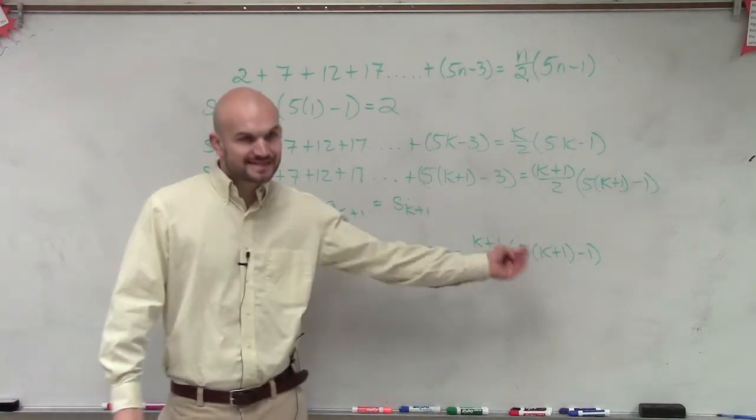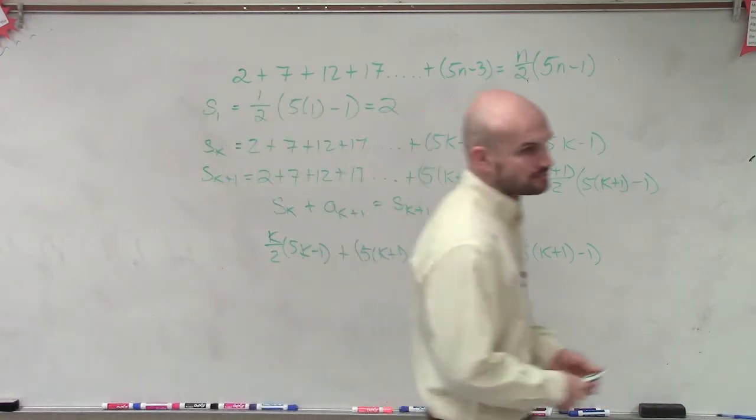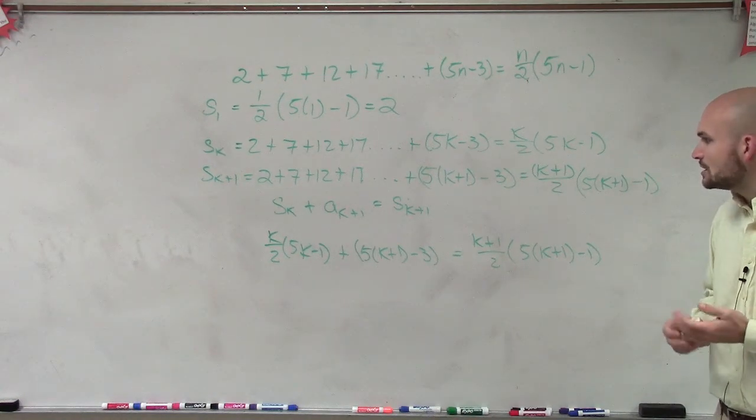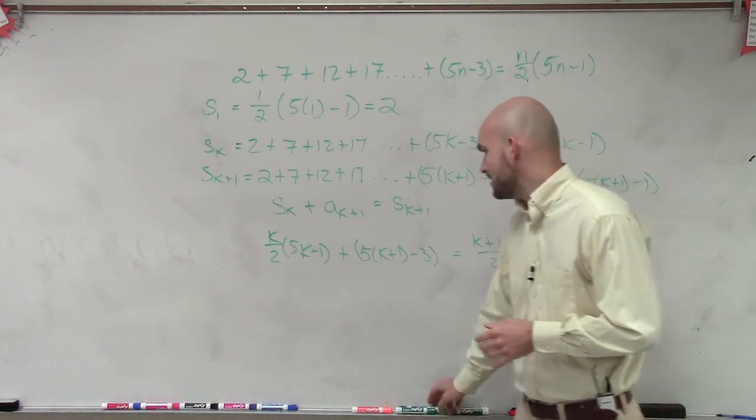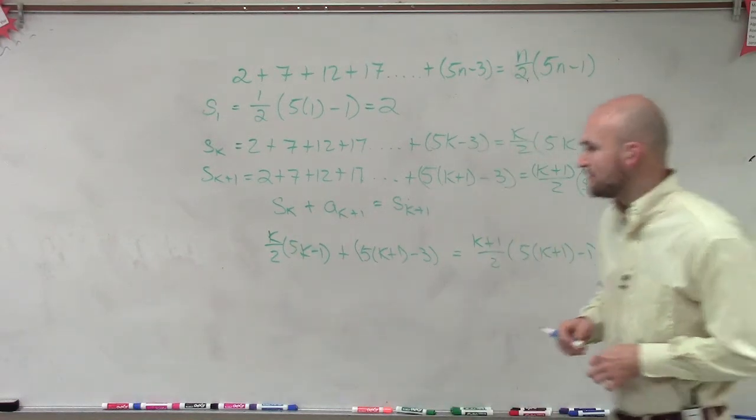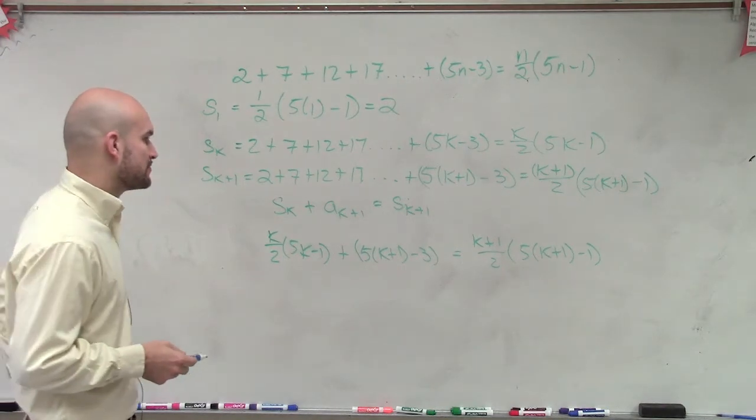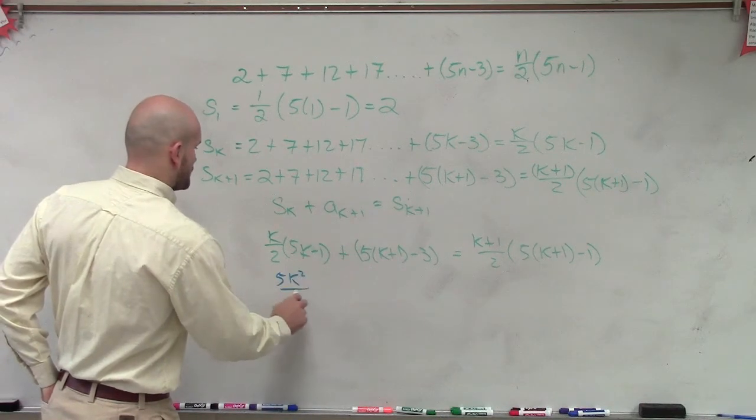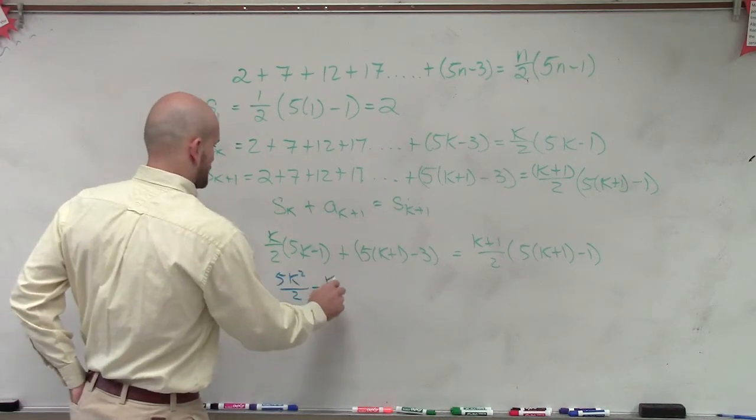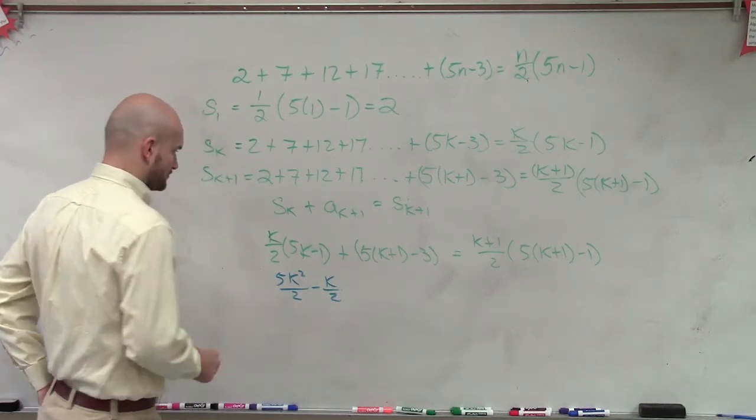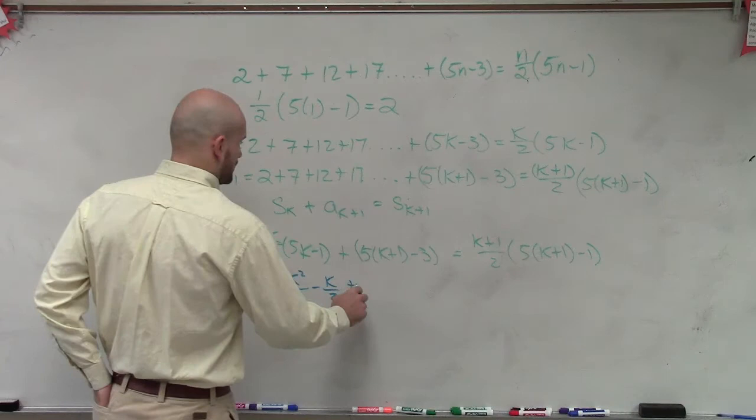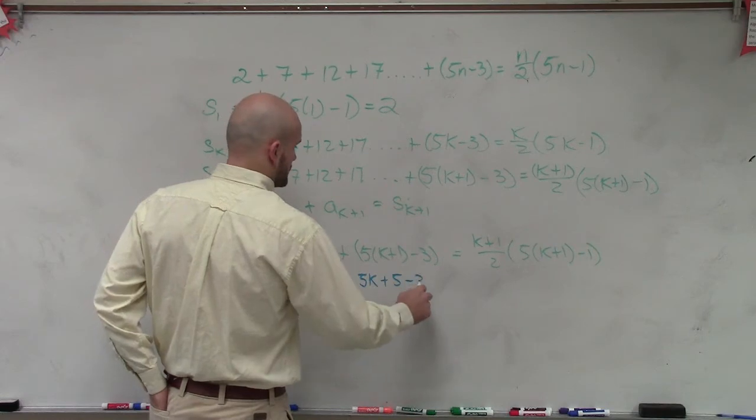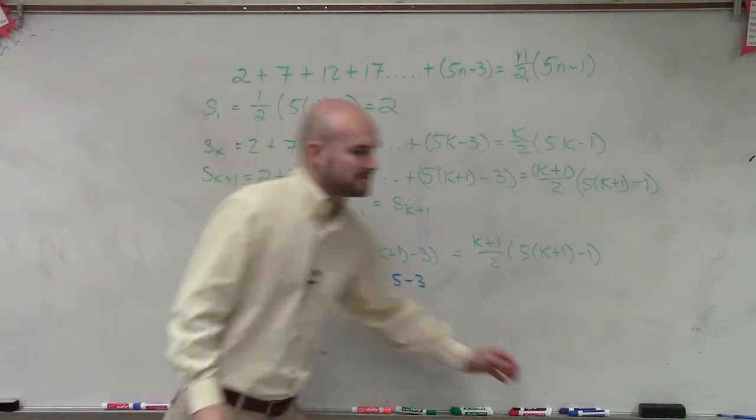So that's what we're trying to prove. This plus this is equal to that. All right, so let's go ahead and simplify a little bit and see what we can come up with. So if I multiply, let's just multiply everything through as best we can. So here I can multiply this. I'm going to get 5k squared over 2 minus k over 2 plus 5k plus 5 minus 3. So 5 minus 3, that can reduce down to 2.